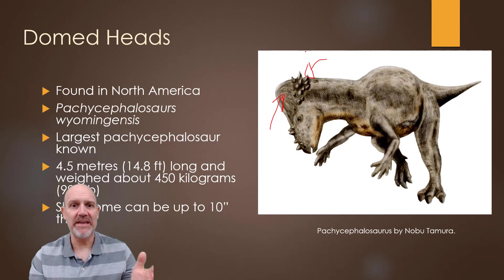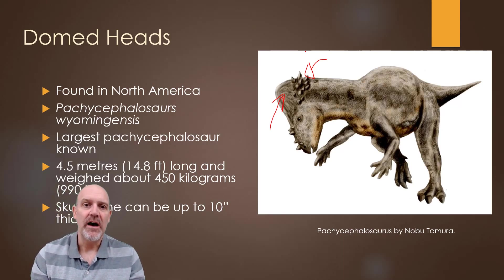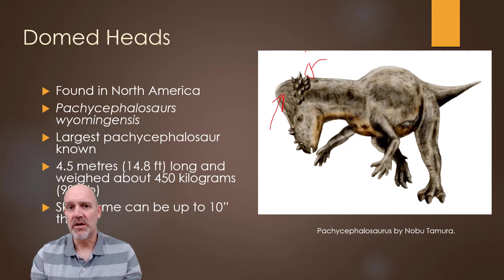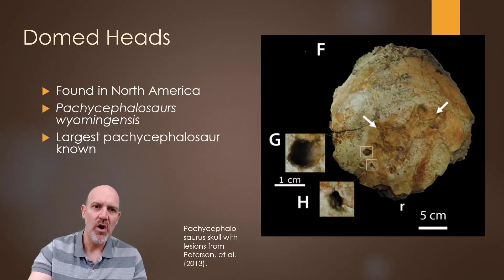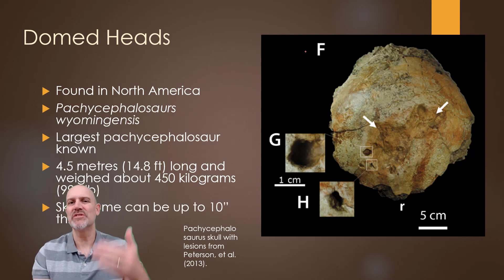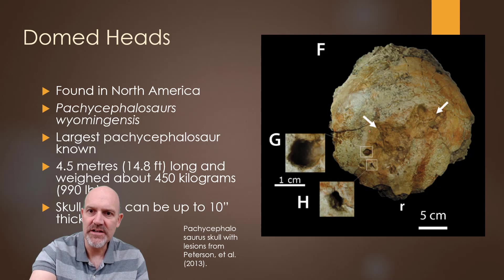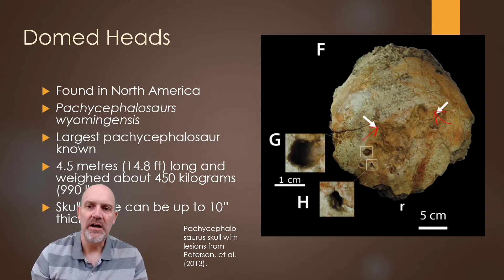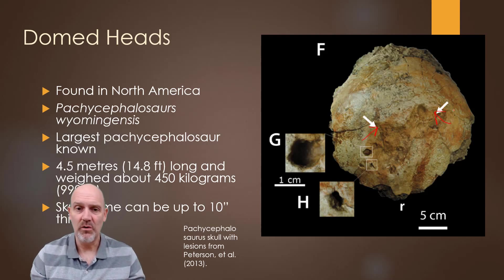The largest Pachycephalosaur known is Pachycephalosaurus wyomingensis — called that because it was found in Wyoming. It's around 14 to 15 feet long and weighs about a thousand pounds, so still a pretty big dinosaur. The question is: what was that thick domed head for? There are lesions on some skulls — blown up under microscopy — showing healed bone, suggesting it was damaged in fighting with another dinosaur.